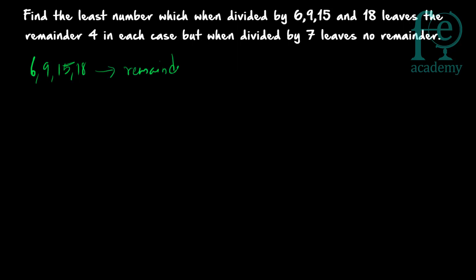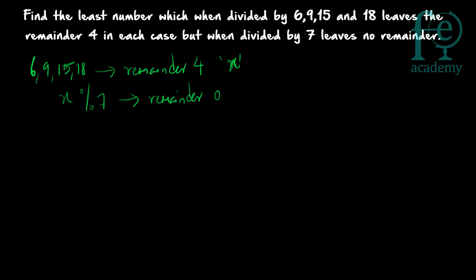Suppose x is the number. Then x divided by 6 gives remainder 4, x divided by 9 gives remainder 4, x divided by 15 gives remainder 4, and x divided by 18 also gives remainder 4. But x divided by 7 gives remainder 0 — in other words, x is a multiple of 7.